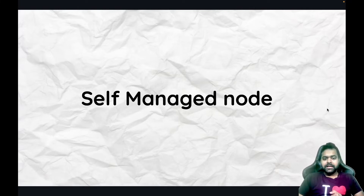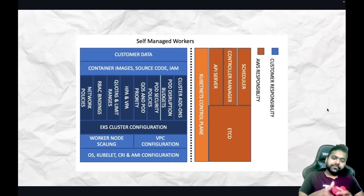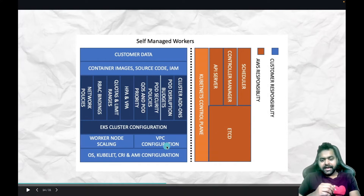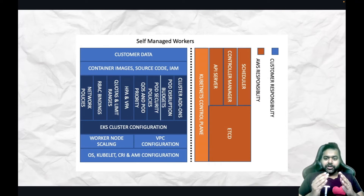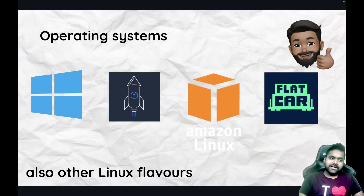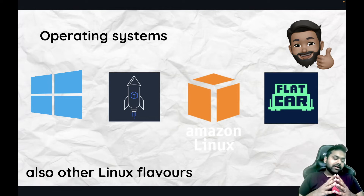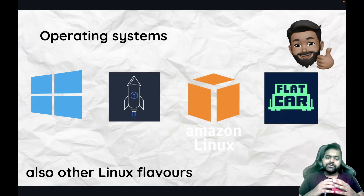Now let's move on to self-managed nodes. Looking at the self-managed worker diagram, if you notice carefully there is no orange section on the left side — meaning the whole data plane is your responsibility as a user. The operating system or AMI choice is up to you. In this case you can use Amazon Linux, Bottlerocket, Flatcar, Windows, Ubuntu, or any other Linux distribution.